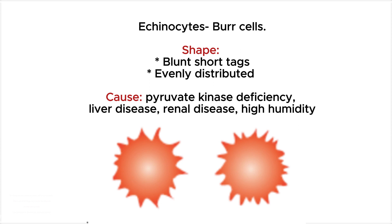Echinocytes are normochromic with normal color. The blunt, short tags are evenly distributed on the cell surface. This condition is caused by pyruvate kinase deficiency, liver disease, renal disease, or high humidity which makes the smear dry slowly.